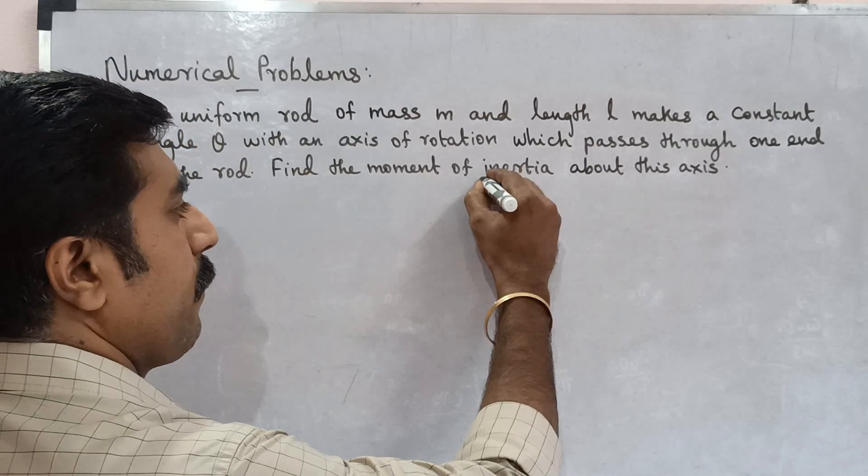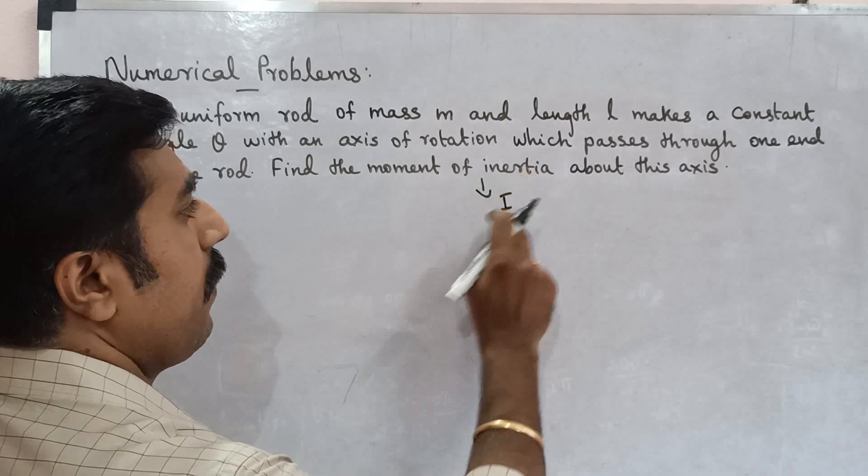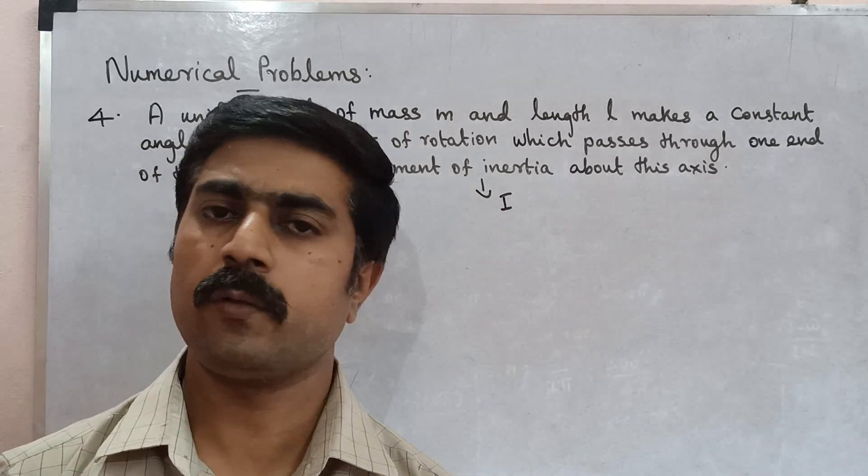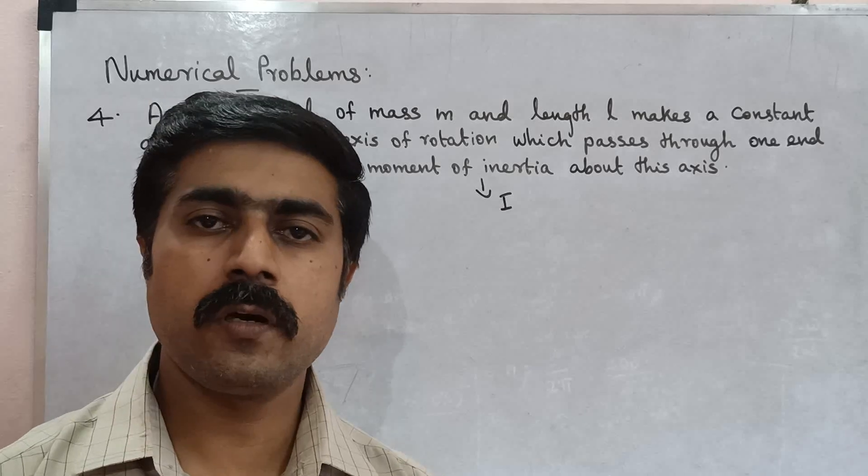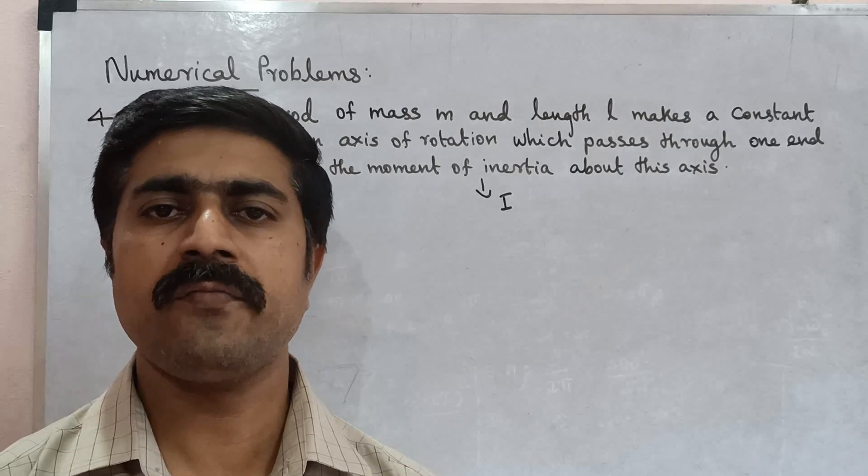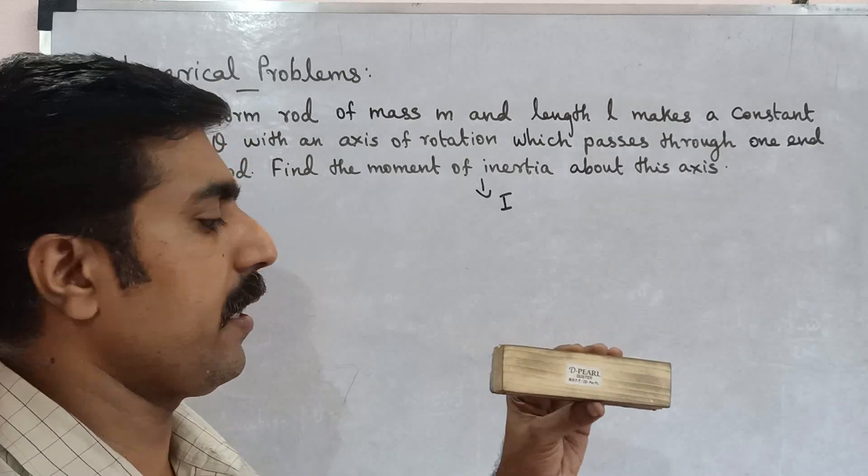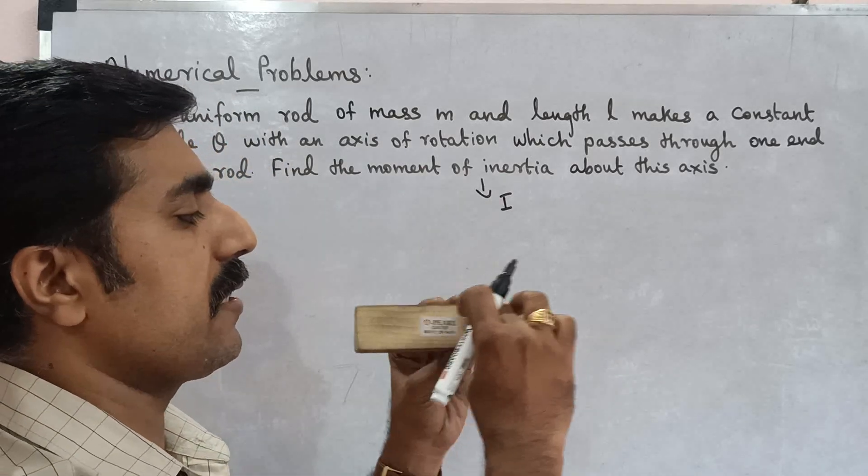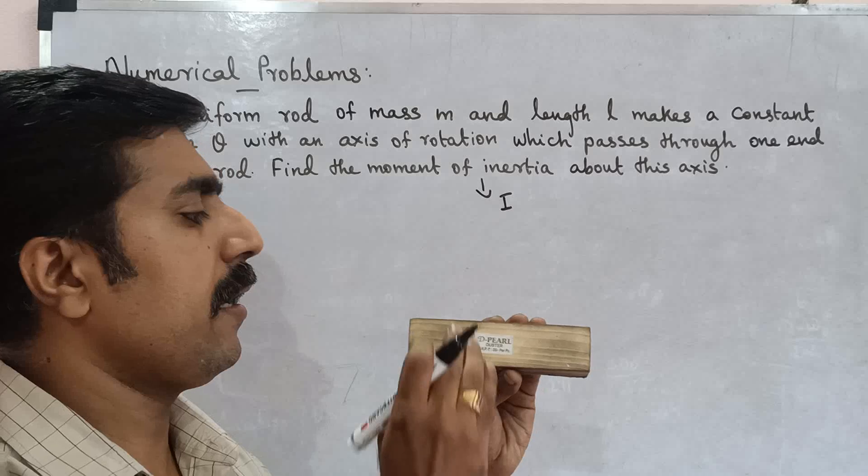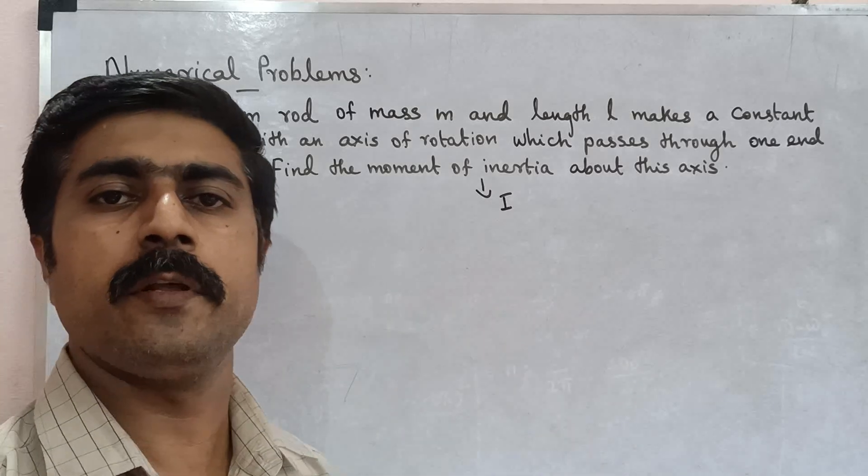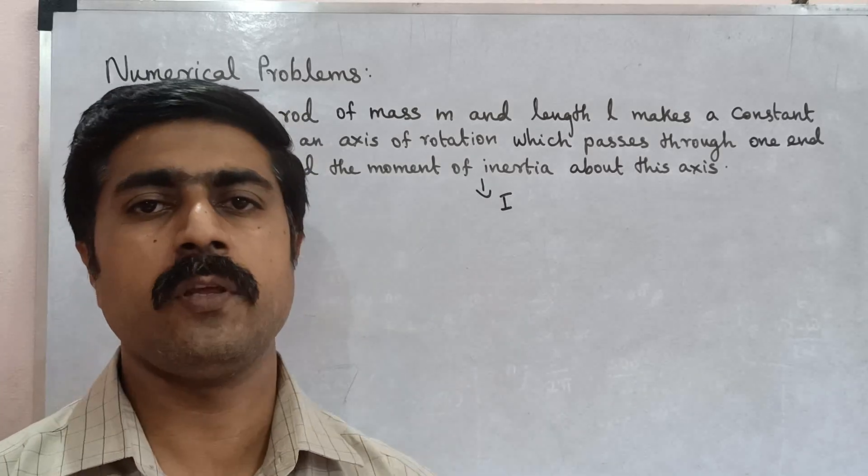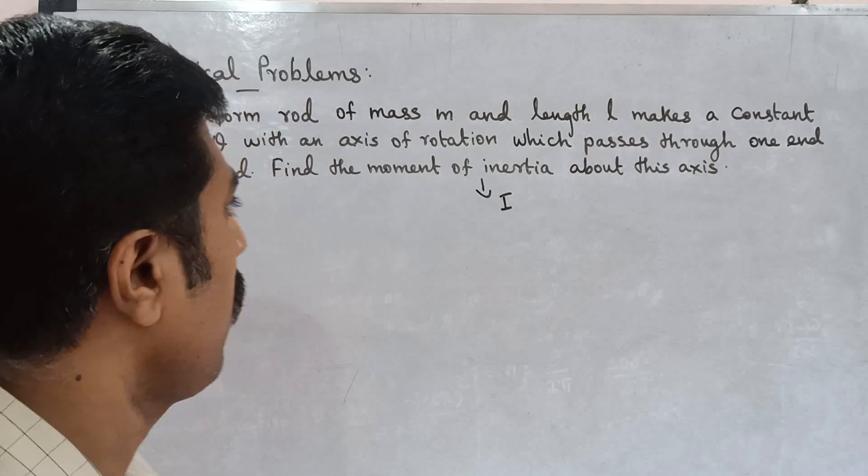So, moment of inertia notation I, that is the rod. We are going to talk about moment of inertia of a uniform rod. Uniform, what do you want to say? It is a uniform mass distribution. It is a uniform rod, correct?